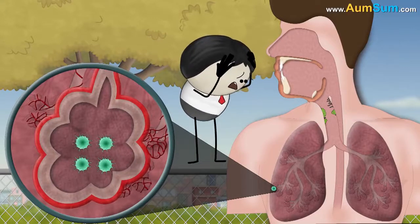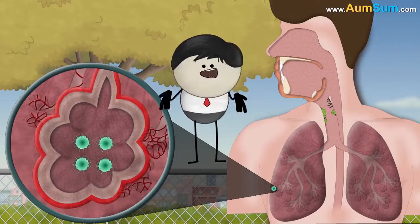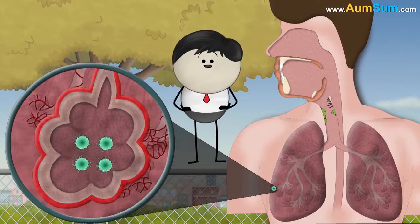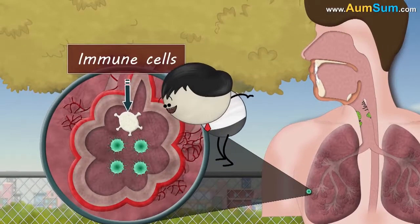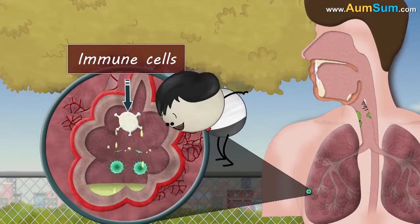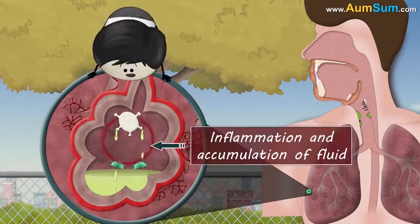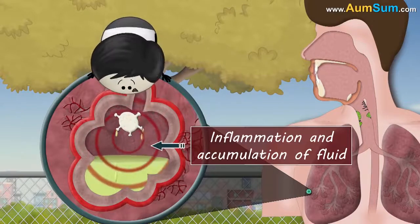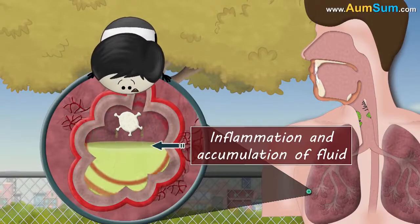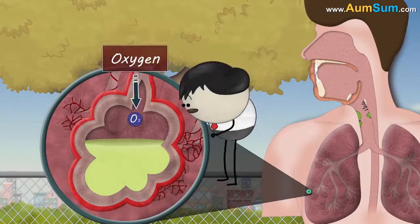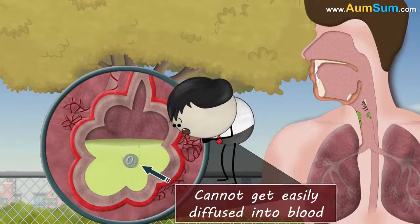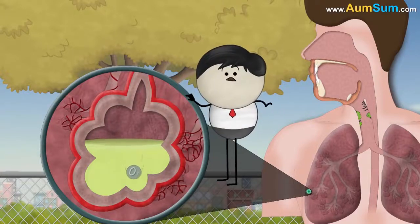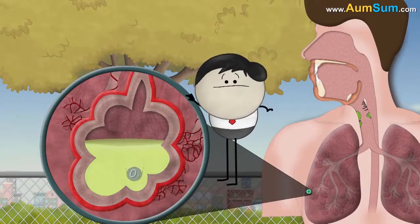Oh no, now what do we do? Now, to protect ourselves, the immune cells start attacking the microorganisms, causing inflammation and accumulation of fluid in the alveoli. As a result, the inhaled oxygen cannot get easily diffused into blood, thus causing difficulty in breathing.